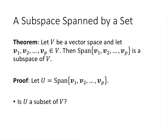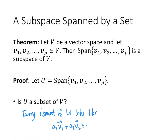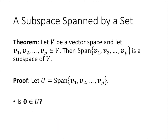Is U a subset of V? Every element of U has the form a1·v1 + a2·v2 + ... + ap·vp. Since V is closed under scalar multiplication and vector addition, that linear combination is certainly an element of capital V, so U is a subset. Is the zero vector in U? Yes — U is the set of all possible linear combinations of the v vectors, so we just take the linear combination with all coefficients equal to zero, and that gives the zero vector.